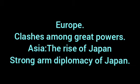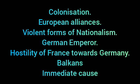Colonization and its fallout: in 1876, only 10% of Africa was under European rule. By 1900, practically the whole of Africa was colonized. Britain, France, and Belgium divided the African continent between them. Few areas were given to Germany and Italy. Britain, France, Russia, and Germany established spheres of influence in China.